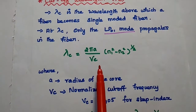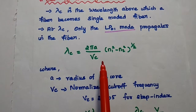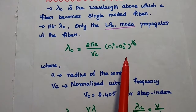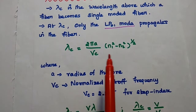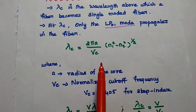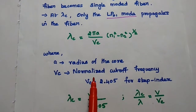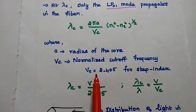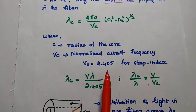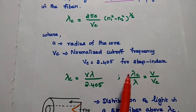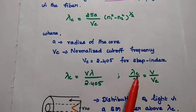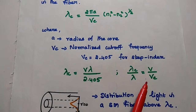Here, A is the core radius of the fiber, N1 is the refractive index of the core, N2 is the refractive index of the cladding, and Vc is the normalized cutoff frequency. We can assume Vc equals 2.405 for step index fiber. As we know, cutoff wavelength is inversely proportional to the cutoff frequency.